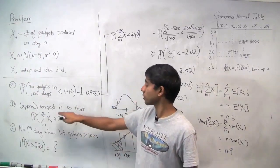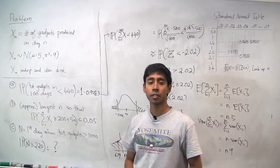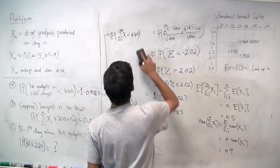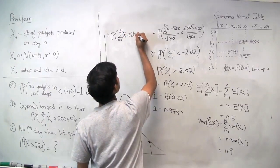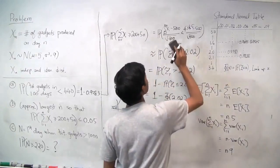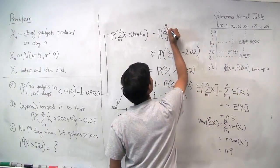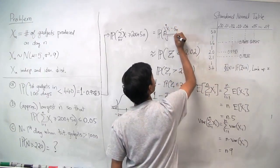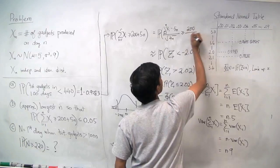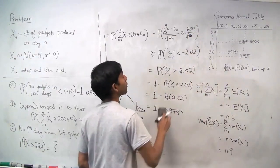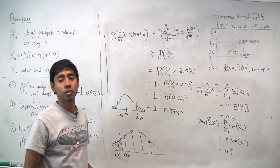For part B, we're asked for the largest n approximately such that the probability satisfies the given condition. Again we can use the central limit theorem and follow similar steps. We have the sum greater than or equal to 200 plus 5n. Standardizing, with mean 5n and variance 9n, the 5n terms cancel when you subtract, so you get 200 over the square root of 9n. We can use the half correction here, but I'm not going to do that to keep the problem simple.